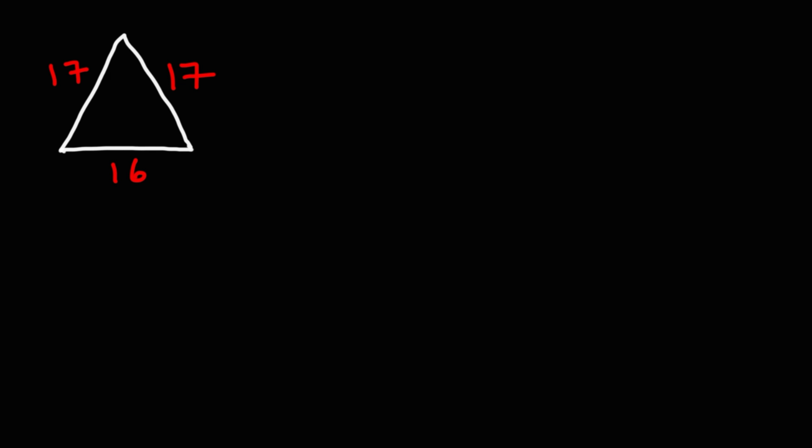Now, in order to calculate the area of any triangle, there's two things that we need to know. We need to know the base of the triangle and the height of the triangle. If we could find those two pieces of information, we could use this formula. Area is one-half base times height.